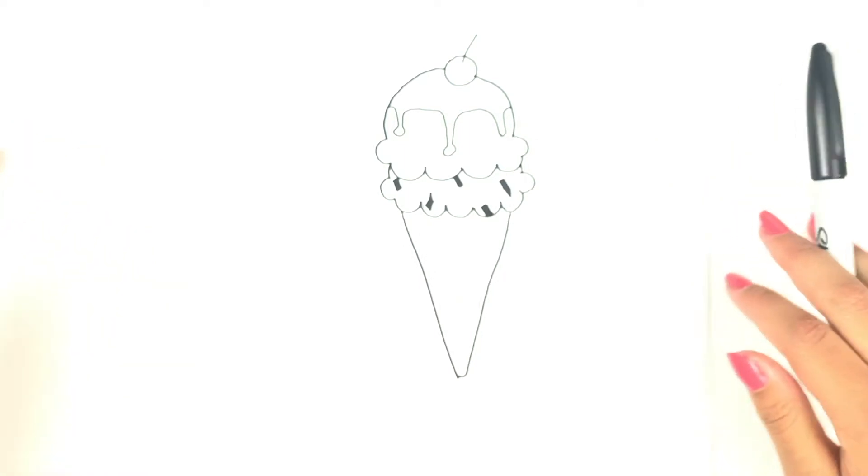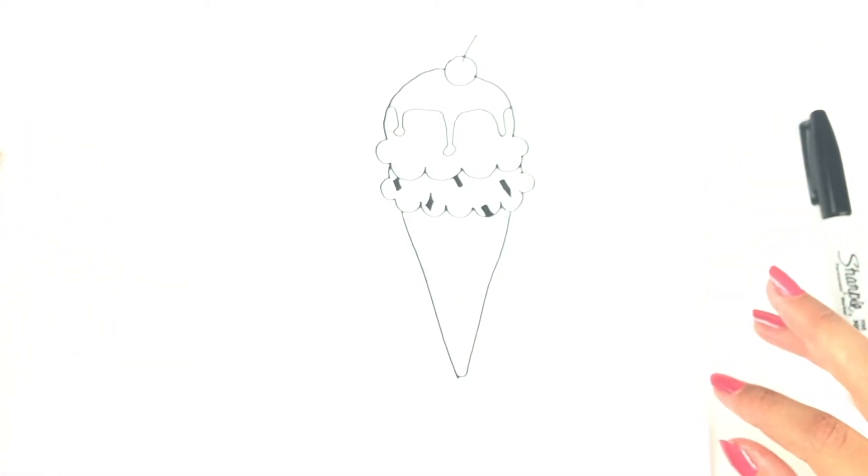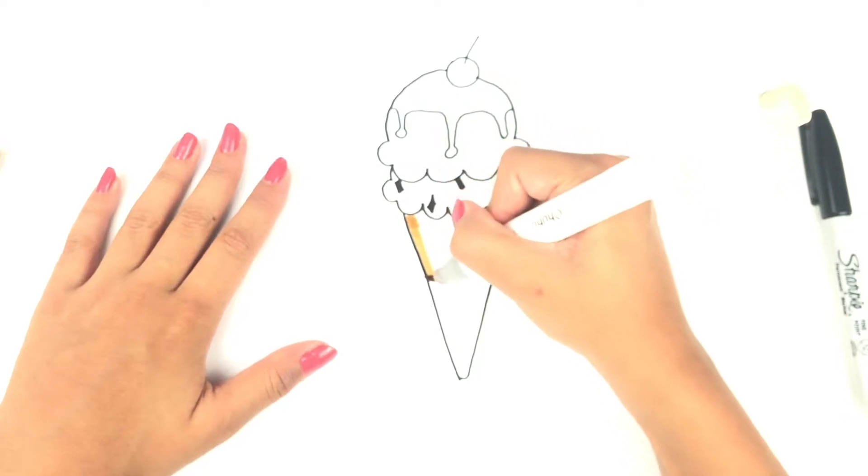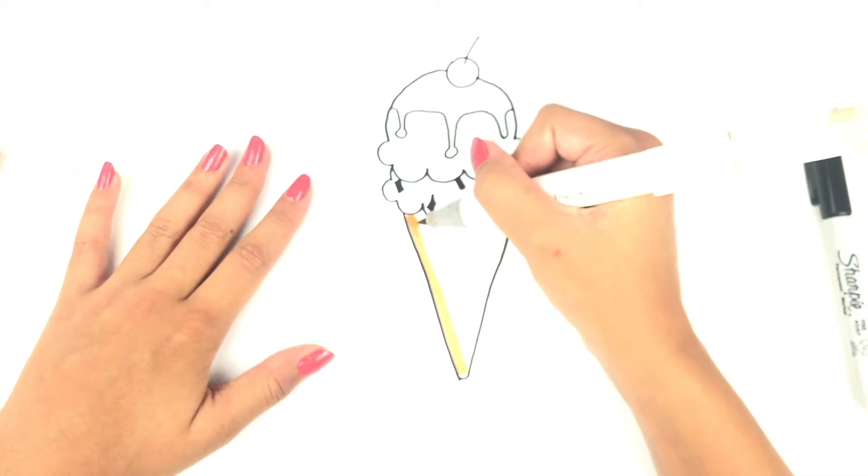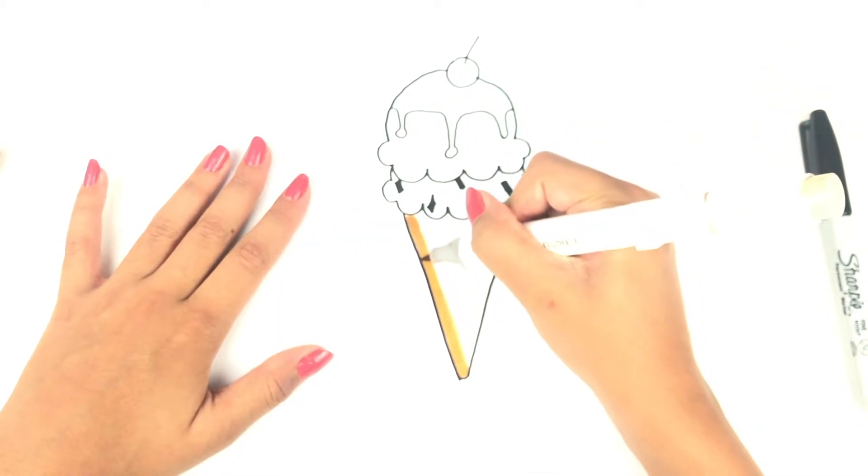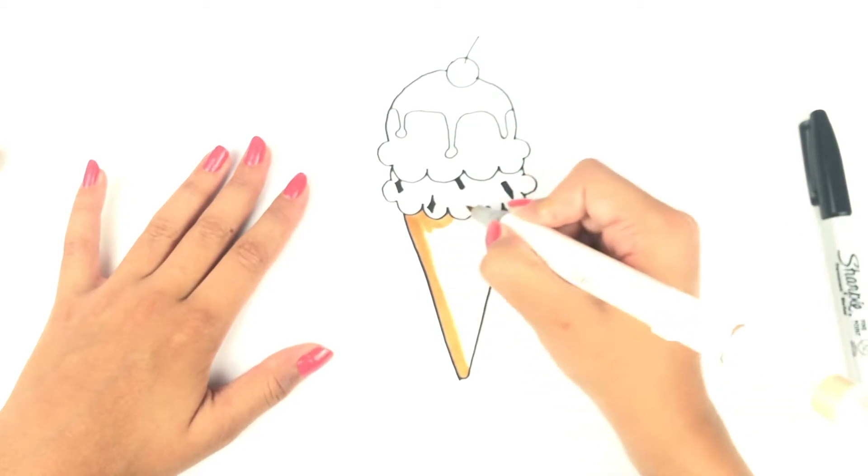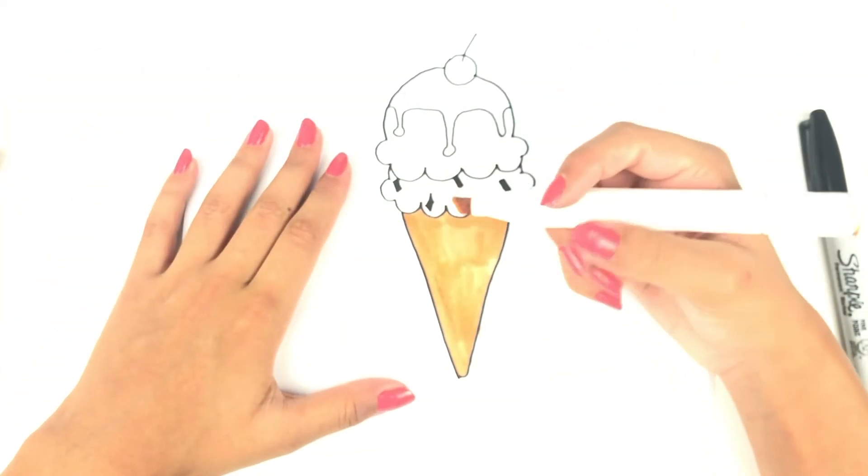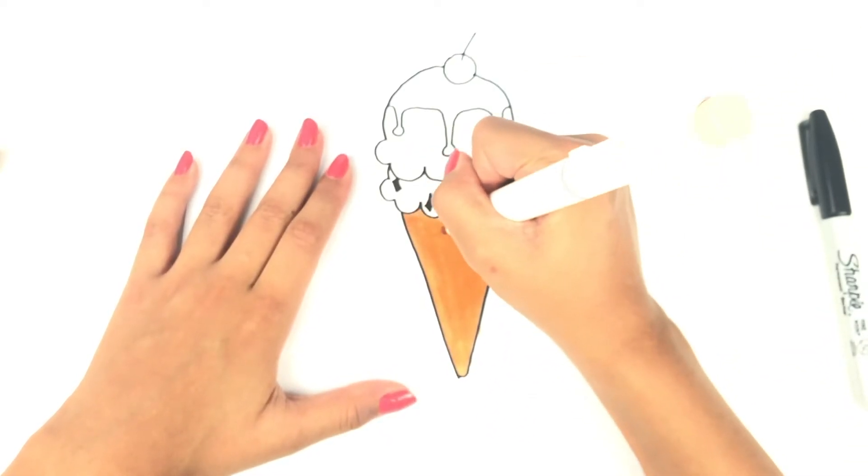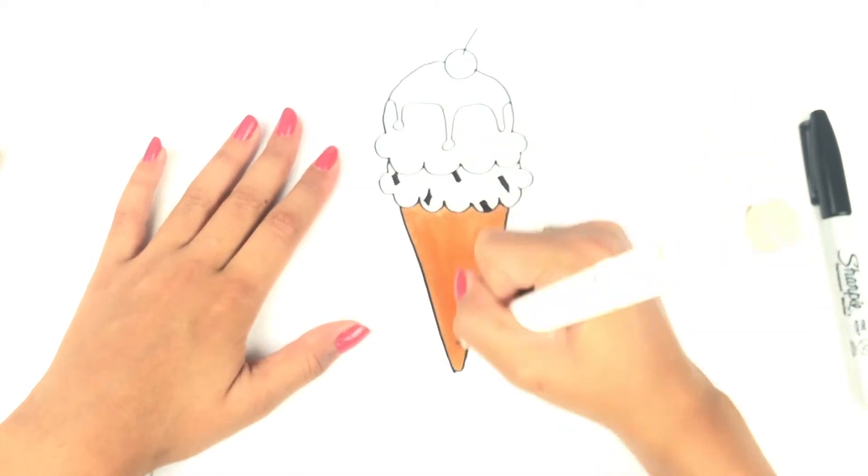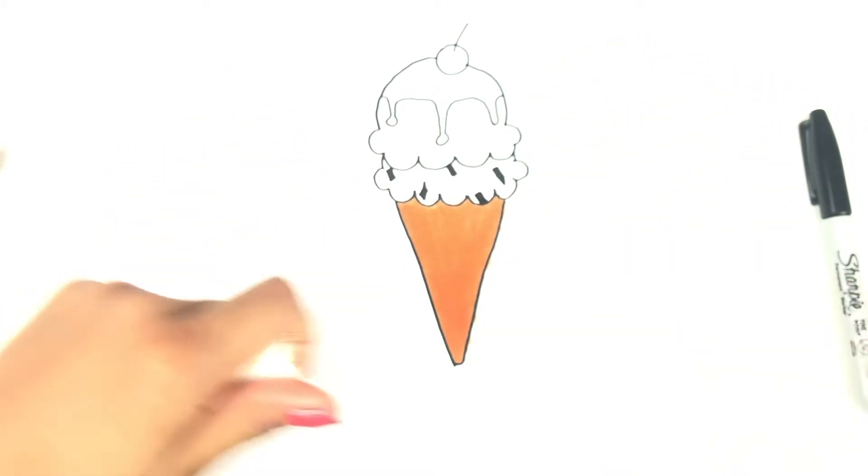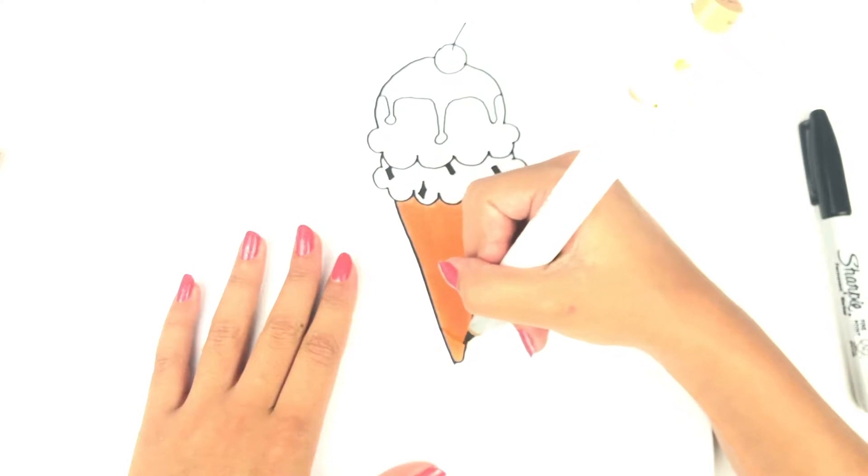After the liner is complete, we're going to color our ice cream starting with the cone. Then with a darker brown, I'm doing cross hatches on the ice cream cone.